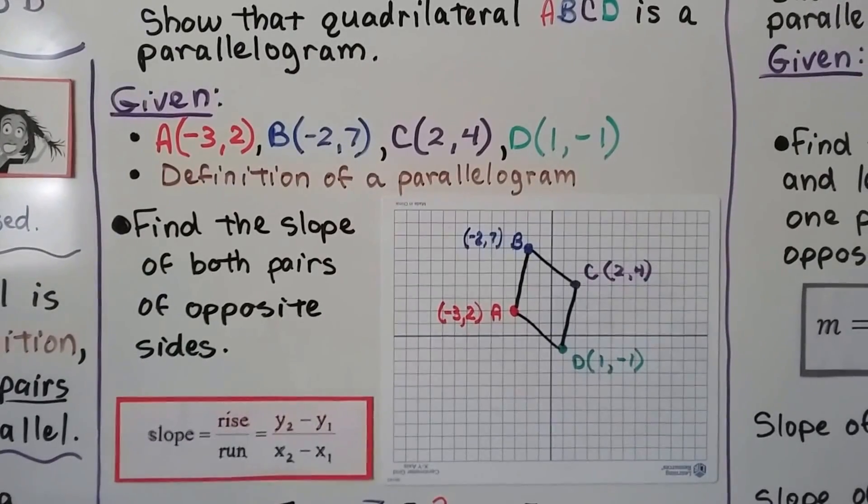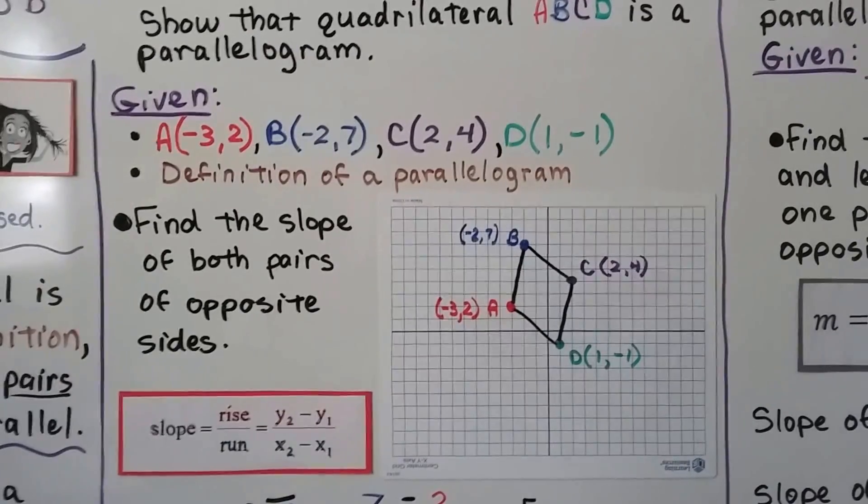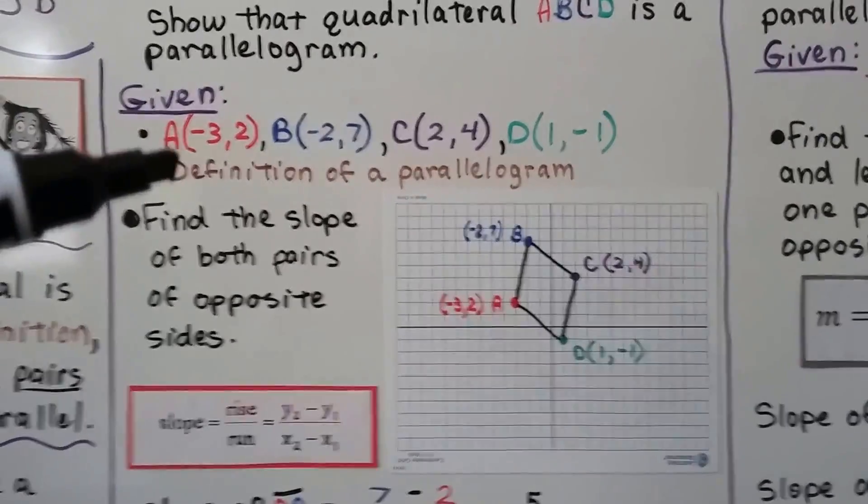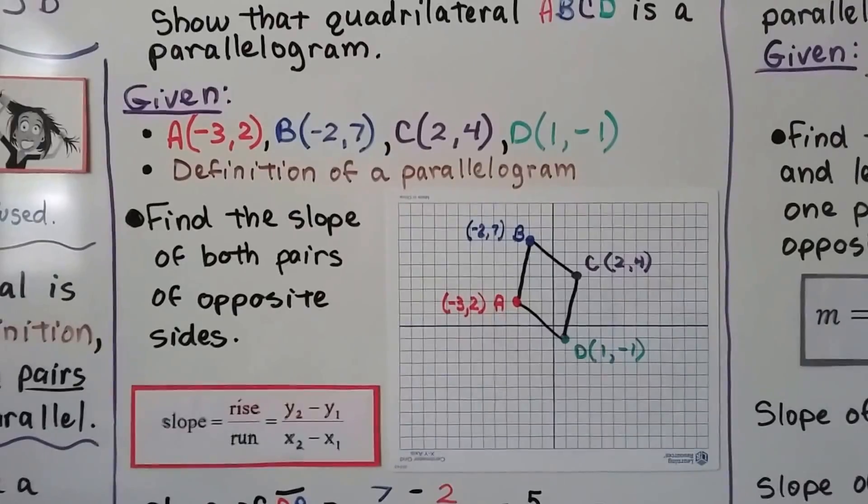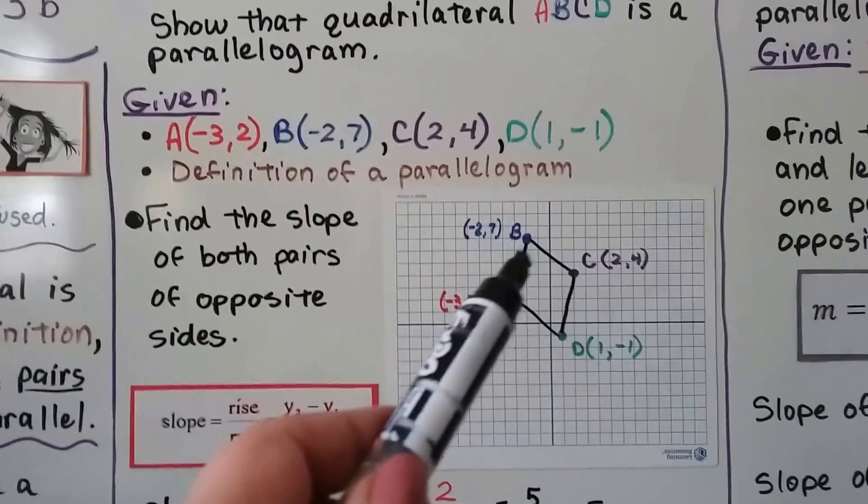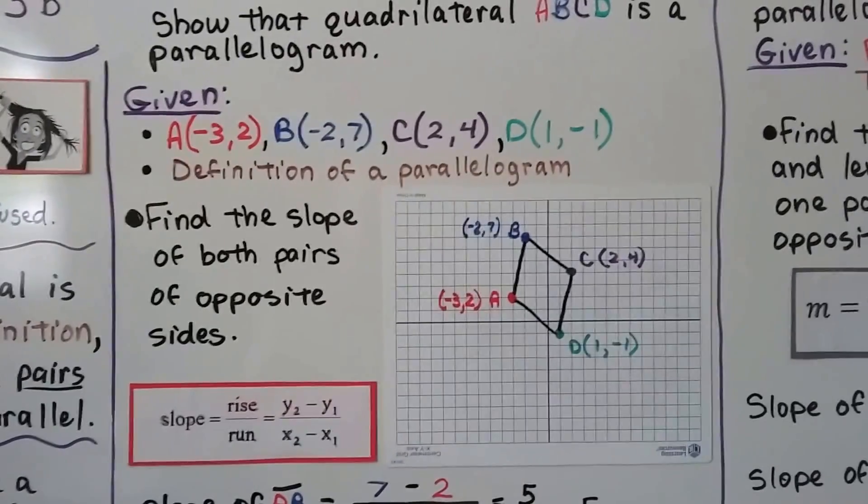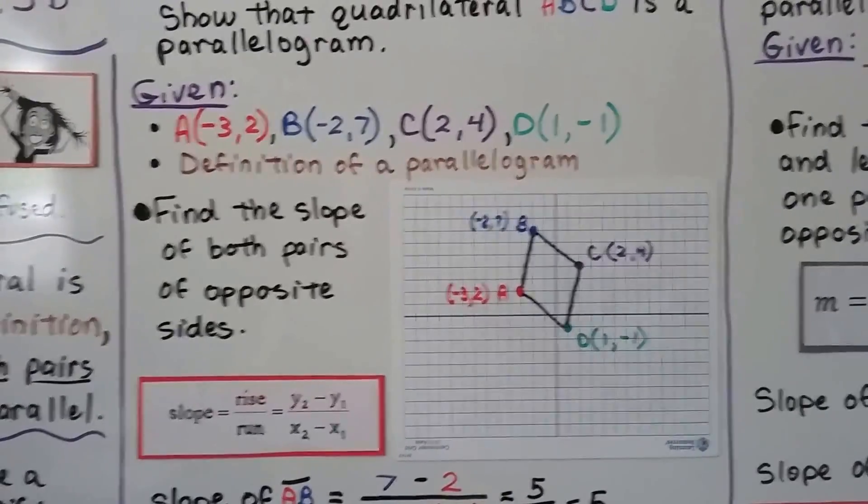It says to show that quadrilateral ABCD is a parallelogram, and it wants us to use these ordered pairs and the definition of a parallelogram. So the first thing we do is we plot these ordered pairs, and we can draw line segments to connect the points.